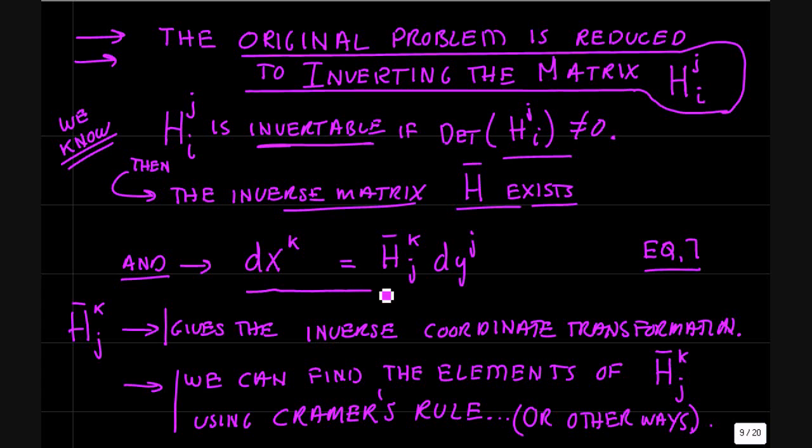And it gives you the coordinate transformation going back the other way from the y coordinates to the x coordinates. So in terms of manifolds where we have coordinates and transformations, we have now inverted the coordinate transformation locally at the point x_p. Not only do we know that the matrix h bar exists, but we can actually find the elements of h bar, using Kramer's rule or in other ways.